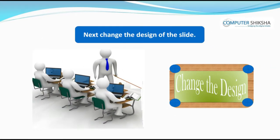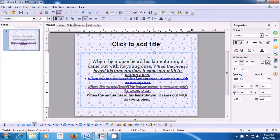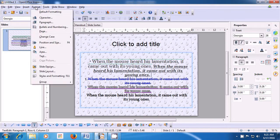Next, change the design of the slide. If you face a problem, watch the video and learn from it. Now, we will see how we can apply a change of slide design. To do that, take your pointer to the Format option in the menu bar and then from the available options, click on Slide Design. A box opens and it shows you the types of slides which are already available as default.